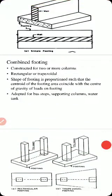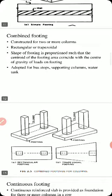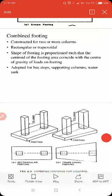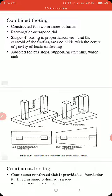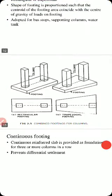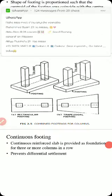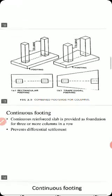Combined footing is constructed for two or more columns. It may be rectangular or trapezoidal in shape, and the shape is proportioned such that the centroid of the footing area coincides with the center of gravity of the load on the footing. It is adopted for closely spaced columns. These figures show rectangular footing and trapezoidal footing.